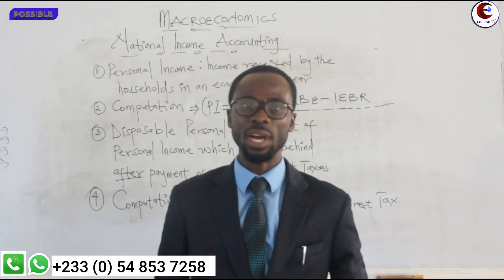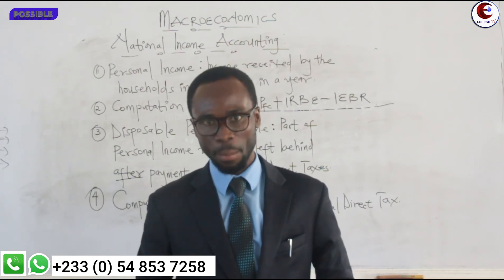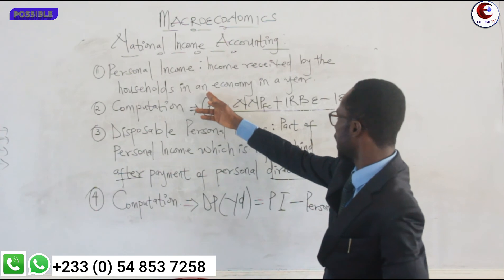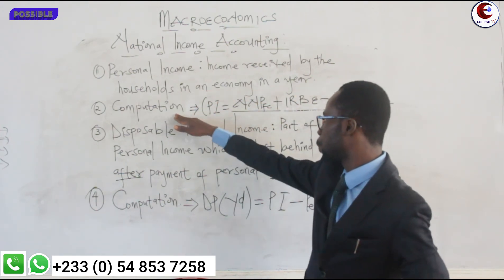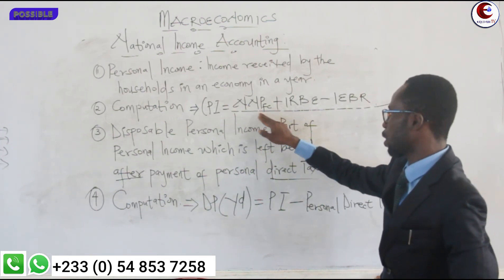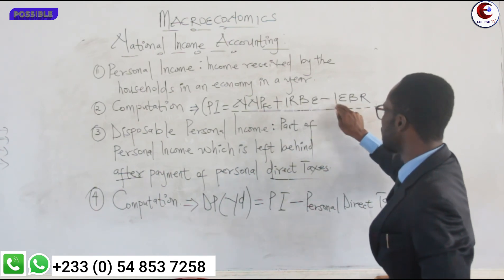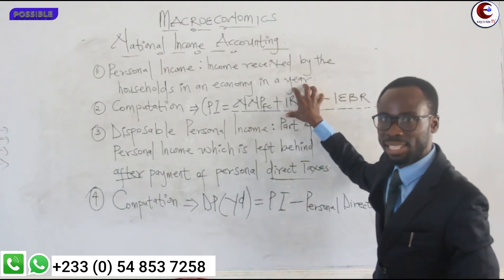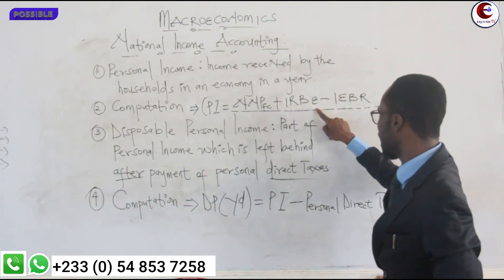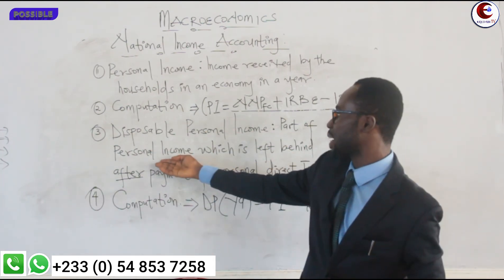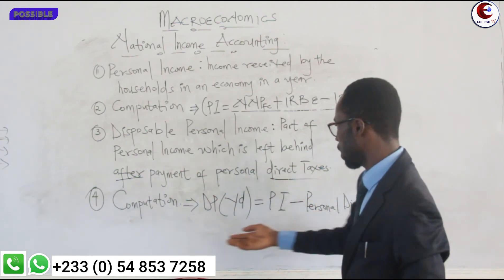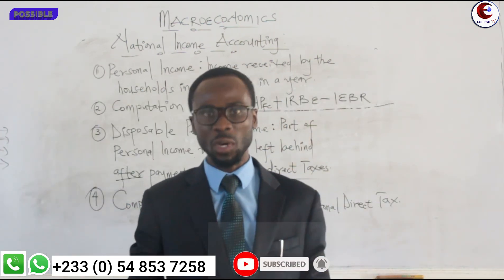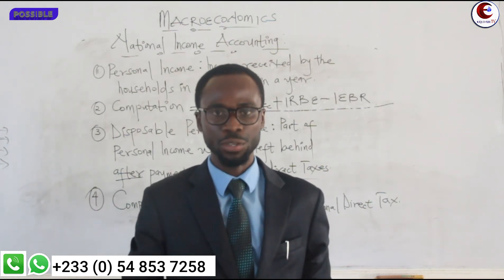In our next lecture we are going to look at the three approaches to the measurement of national income. To recap: personal income is income received by the household in an economy in a year; it equals NNP at factor cost plus income received but not earned, minus income earned but not received. Disposable income is personal income minus personal direct tax. My name is Possible from Ghana — make sure to subscribe to the channel for more videos.